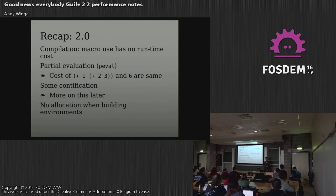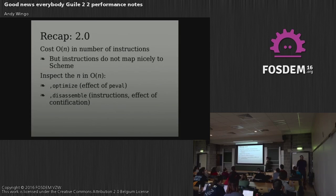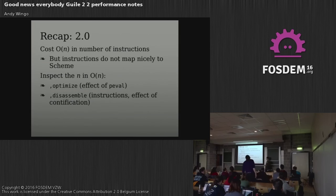There are other changes in the runtime environment that materially affected the way you program. In essence, your cost model in 2.0 is: how expensive is my program? Well, it's how many instructions does it take to run. Instruction count and your program — there's not such a direct correspondence there. You can inspect the effect of partial evaluation on your code, and you can also use the disassemble command, which shows you the bytecode instructions.